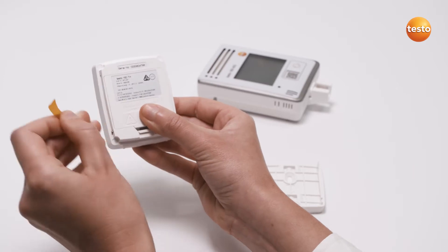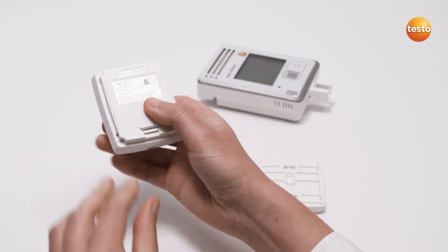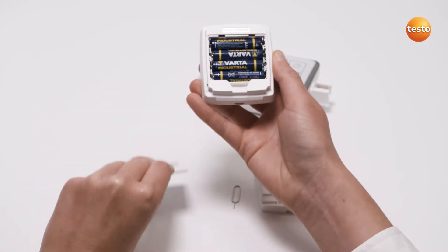Then remove the protective strip from the batteries. To replace the batteries later, simply remove the cover from the battery compartment and insert the new batteries.